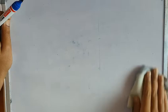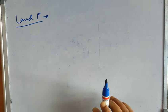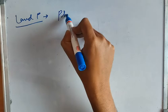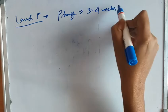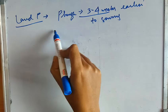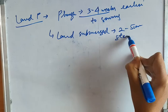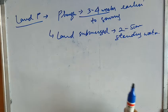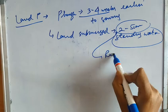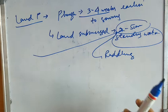For land preparation of rice or paddy, we plow three to four weeks before sowing. The land should be submerged in two to five centimeters of standing water — this is achieved through puddling. After puddling, we transplant the nursery-raised paddy seedlings into this two-to-five centimeter standing water.